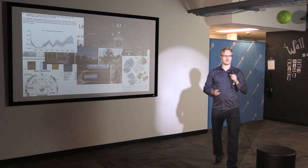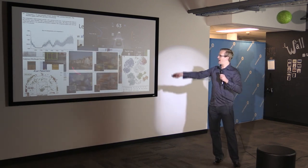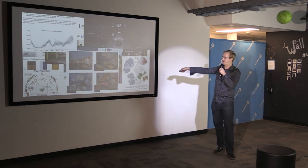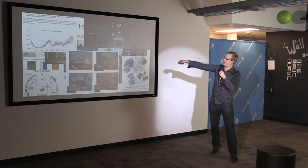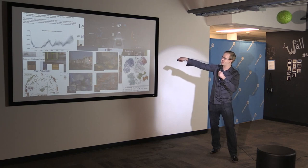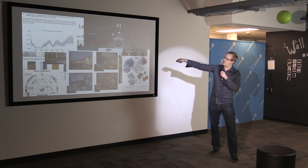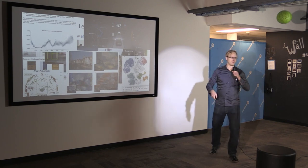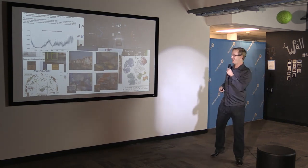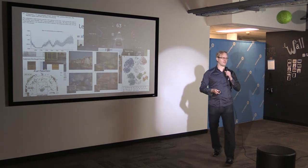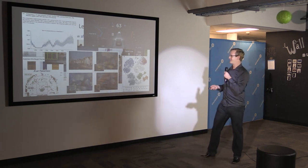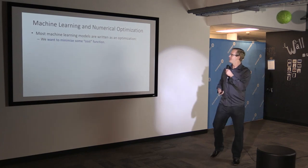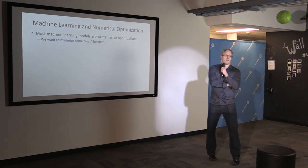If you hate all this stuff and just want to paint pictures, people are doing machine learning for that too. There's a picture from Tübingen — one of the top ML centers in Europe — where you give it your picture and a Van Gogh painting, and it spits out a Van Gogh version of your picture. Google started selling these for way more money than Google needs to sell paintings for.